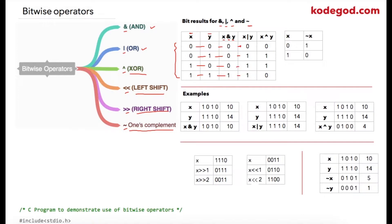For the XOR operator, if both bits are the same — zero-zero or one-one — we get zero; otherwise we get one. For one's complement, each bit is converted to its opposite: if we have zero it will be converted to one, and if we have one it will be converted to zero.